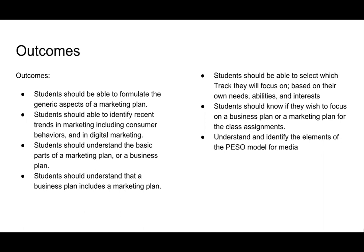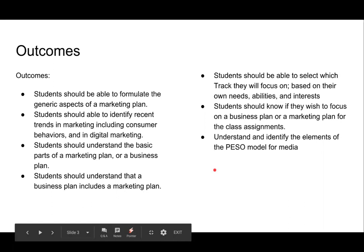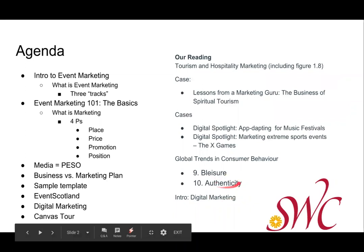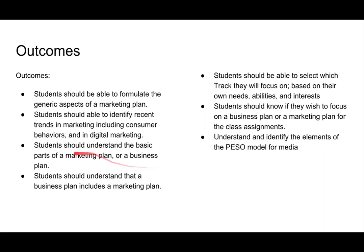I'm going to talk about digital marketing today. In the reading, you'll read about global trends like 'Bleisure' — a combination of travel that combines business with leisure — and we'll also talk about authenticity, which will come up throughout the course. The next outcome is understanding the basic parts of a marketing plan. You should have a sense of how they connect together — like how the steering wheel connects ultimately to the wheels, powered by the engine.